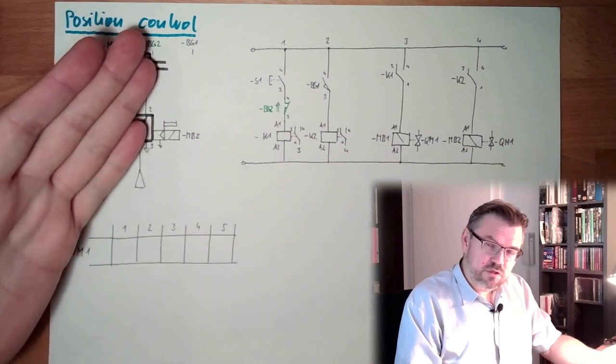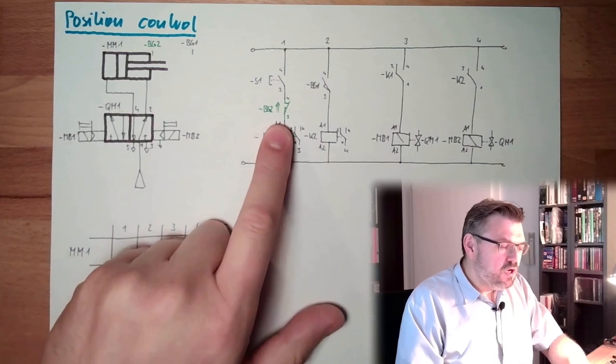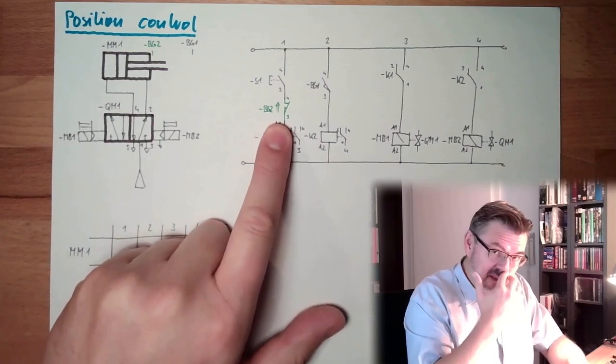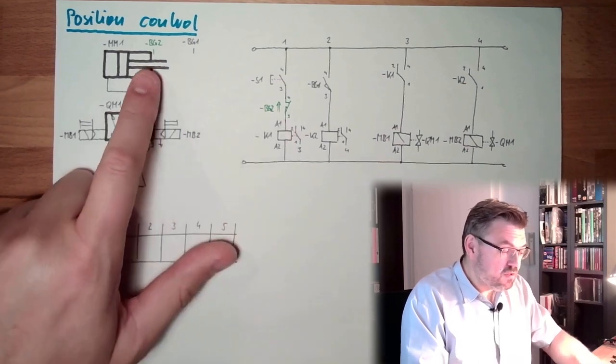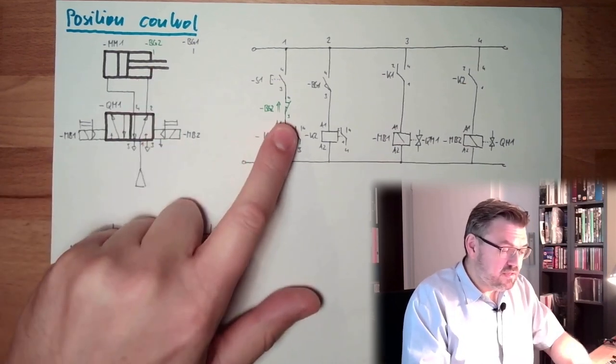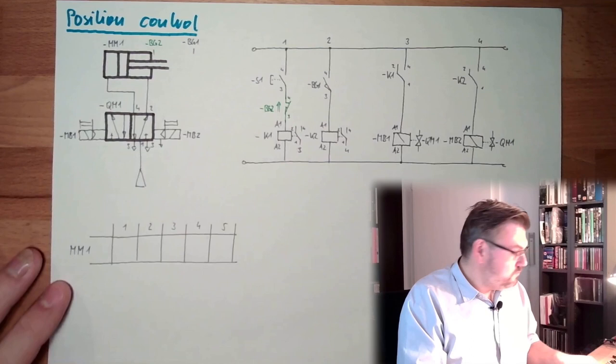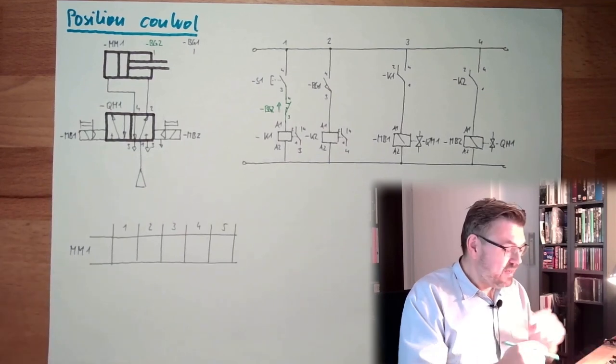So we have a second limit switch. The second limit switch is usually operated during, if it's in. So in-stance it is operated. Let's analyze this.